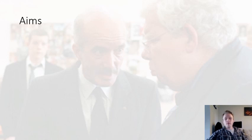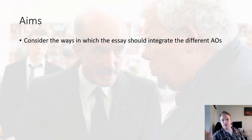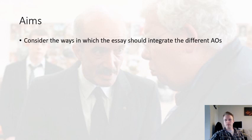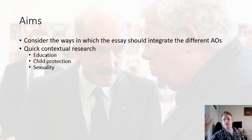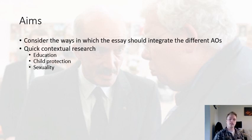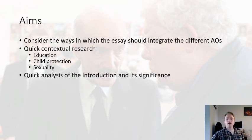We need to consider: you're working towards this comparative coursework. You need to be making points where all the different assessment objectives are covered. You're trying to make an essay where you're hitting AO1, AO2, AO3 all within the same essay points. In terms of context, that'll be AO3 — but I want to make sure you're doing some research around the key question areas that are going to help facilitate your context coming into the essay.